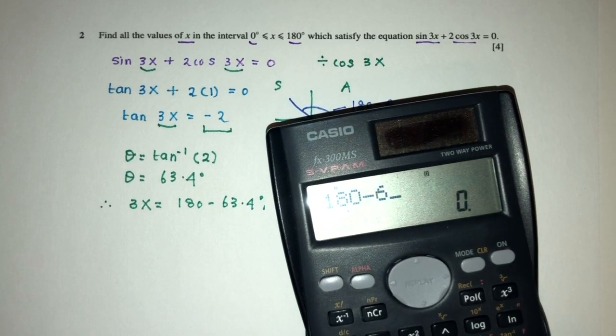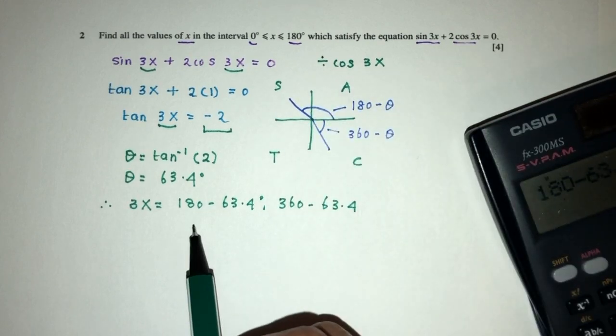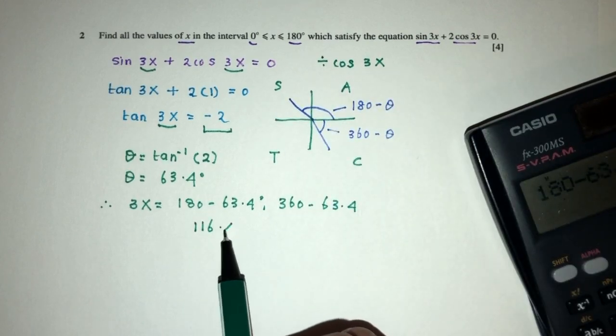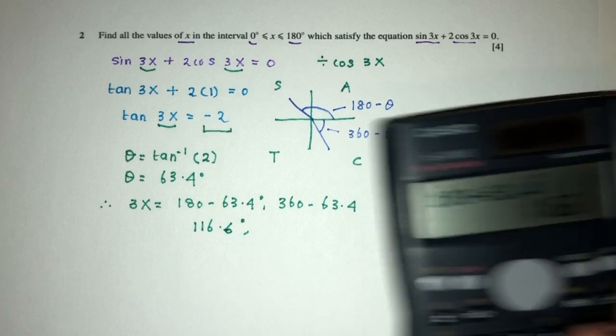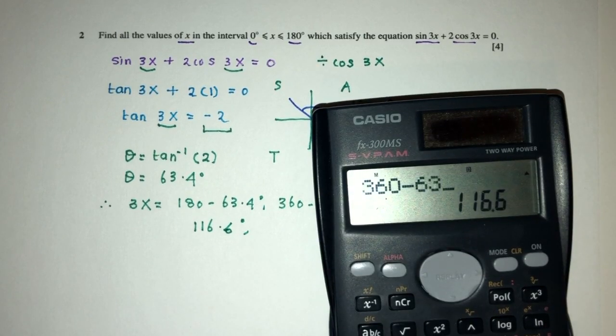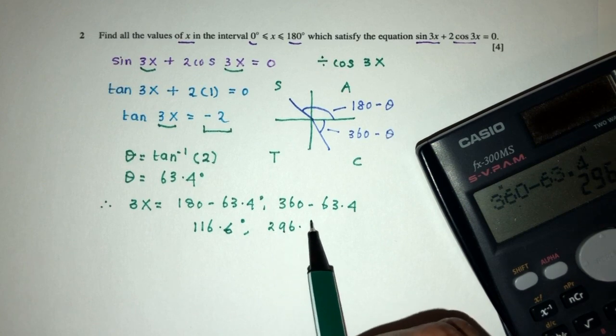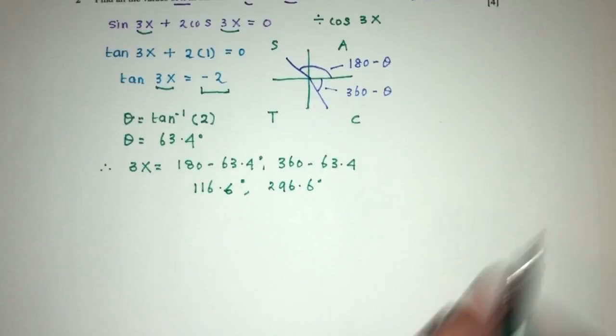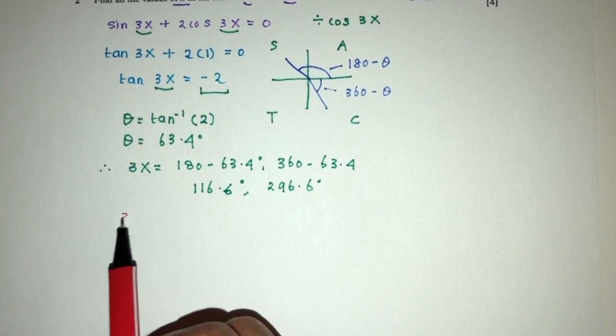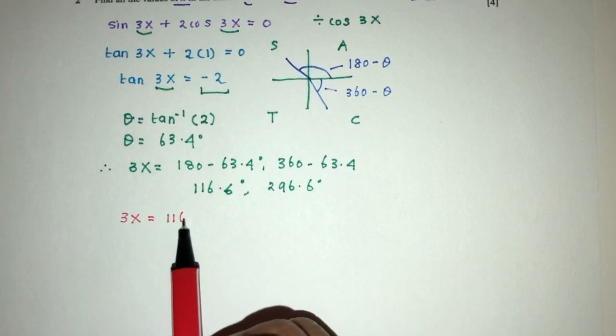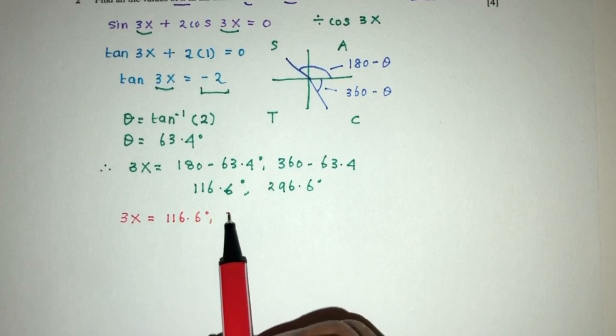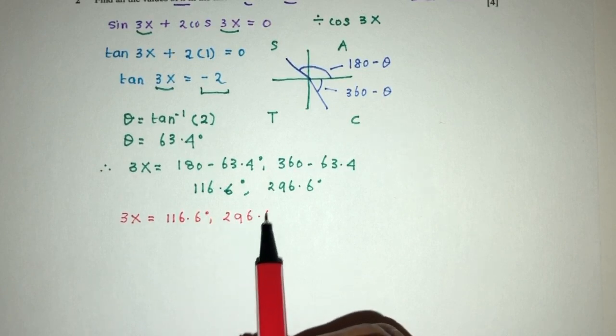So 180 minus 63.4, that will be 116.6. And 360 minus 63.4, that will be 296.6. So right now we have 3x is equal to 116.6 and 296.6.